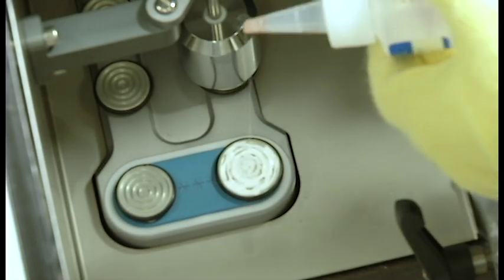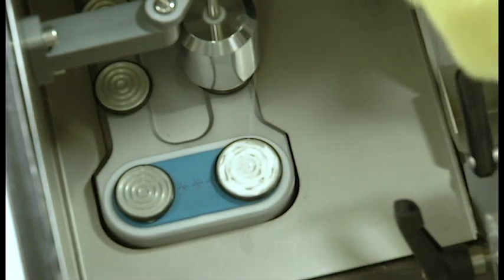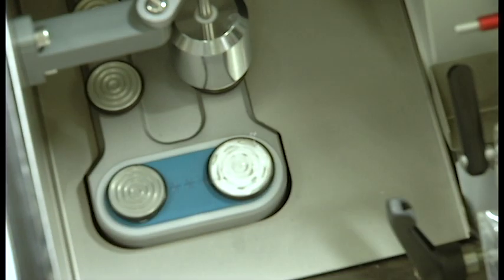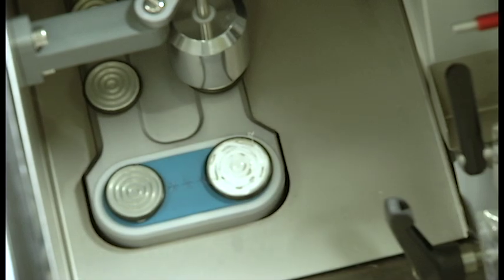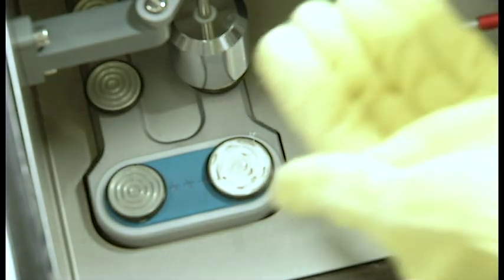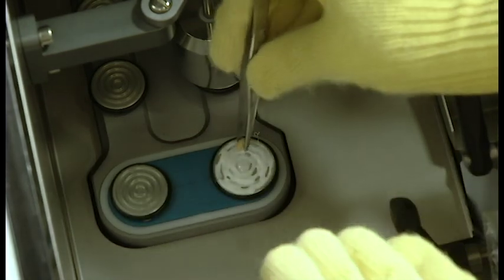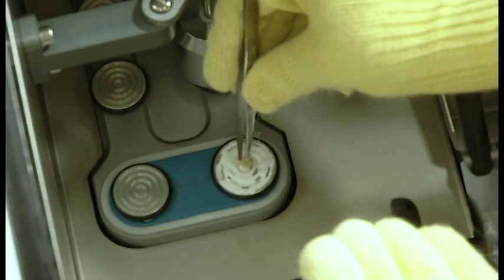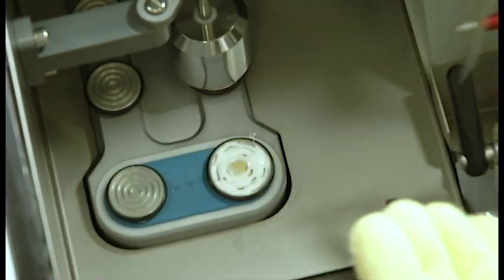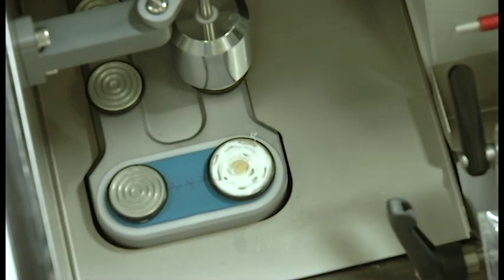Once you place your tissue in the center of the disc, making sure that it is in media that is not yet frozen, you are going to use the heat extraction bar to completely freeze the sample. Simply place the bar over the disc and it will do all the work for you. Leave it alone for a few seconds and it will begin rapidly freezing the sample.